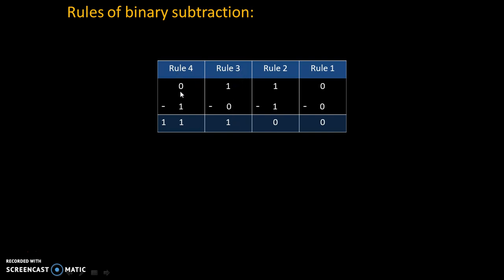Rule number 4 is, 0 minus 1. Now we cannot subtract 1 from 0. That's why we will take borrow, 1 borrow. That's why, 0 minus 1 is 1 with borrow 1. Remember this, this is very important rule. 0 minus 1 is 1 with borrow 1.